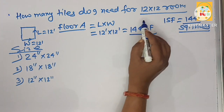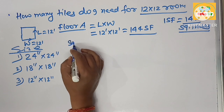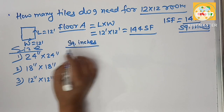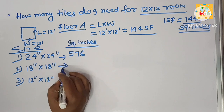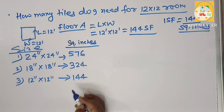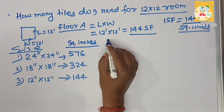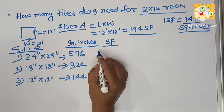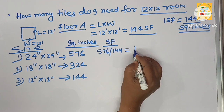If you use 24 inches by 24 inches tiles, how many tiles are required to cover a 12 by 12 room floor? First, calculate the area in square inches of each tile by multiplying both figures. For the 24×24 tile, this comes to 576 square inches. For the 18×18 tile, this comes to 324 square inches. For the 12×12 tile, this comes to 144 square inches. Now convert to square footage by dividing by 144. So 576 divided by 144 equals 4 square feet.